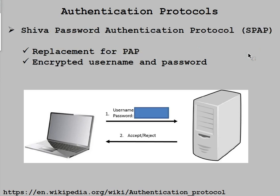So what they wound up doing after that was they decided: we know that we're going to have some unencrypted traffic sent. Why don't we just go ahead and make a modification to the Password Authentication Protocol? We'll call it Shiva Password Authentication Protocol for the designer, and we'll replace PAP and actually encrypt both the username and password. So both of those would be encrypted, and on the other side they would decrypt the information and you would get an acceptance or a rejection.